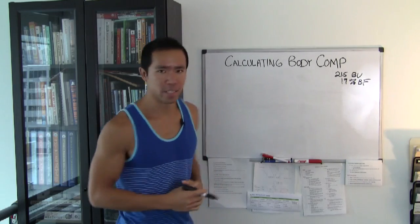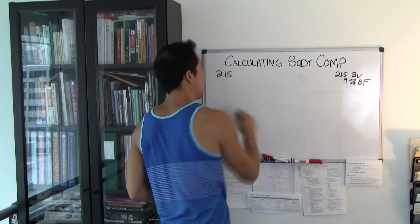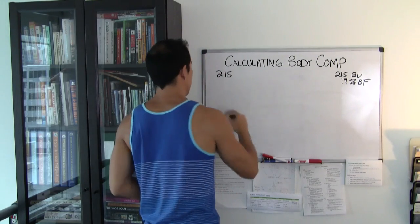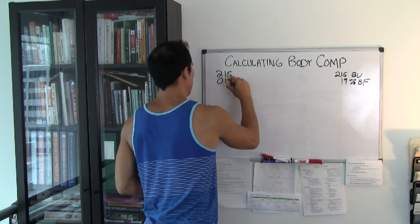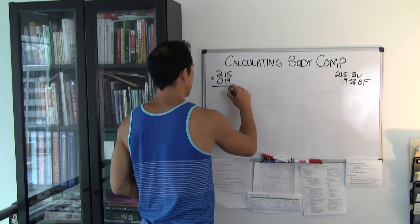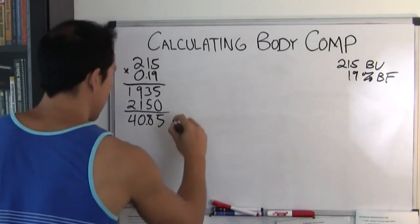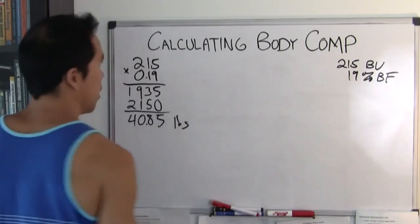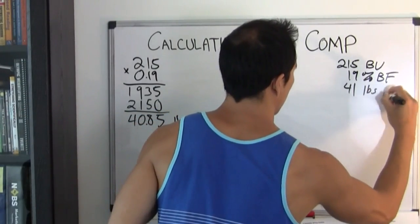And now let's do some calculations here. So 215, let's find out how much of his weight is body fat. So we do 215 times 0.19, that's 19% there. And that gives us 40.85 pounds of body fat. So let's write that over here, it's about 41 pounds fat.